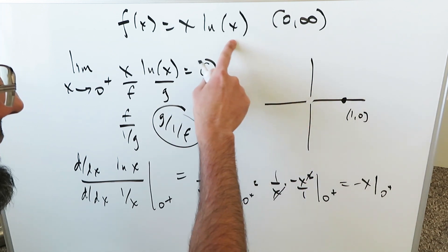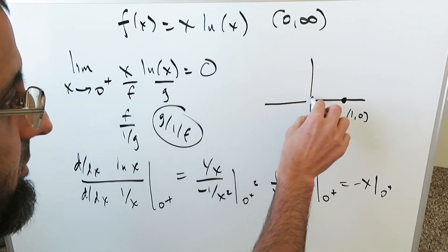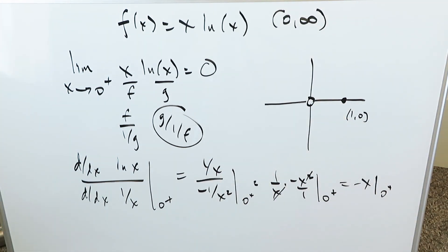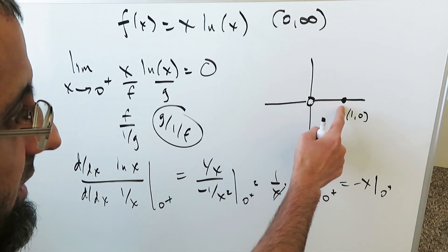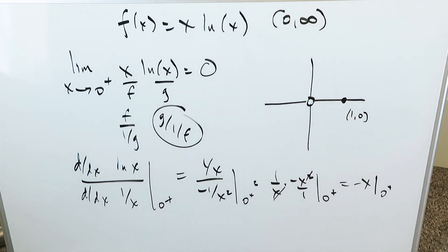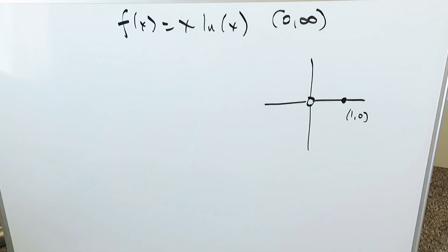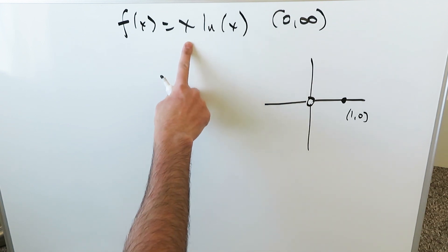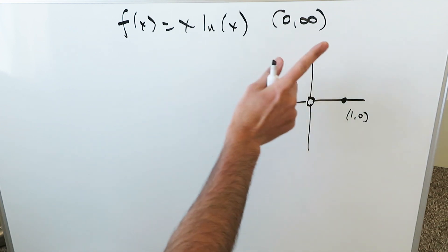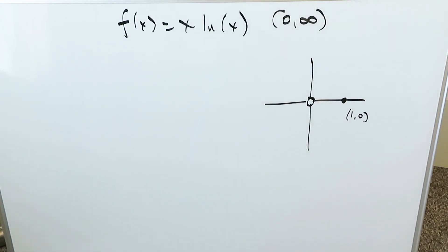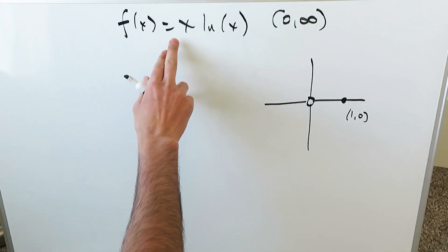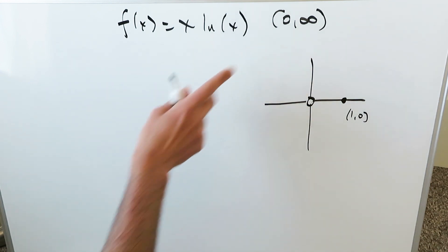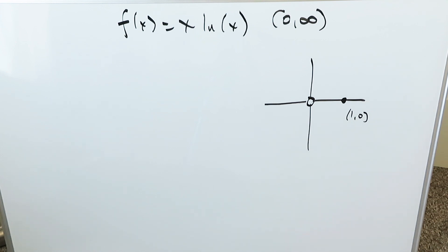This confirms clarity on the origin. The function approaches zero there, but since natural log of zero is undefined, the origin is an open or empty value on the graph. So we have two roots: one closed at (1, 0), and one open at the origin. As for the extreme behavior, taking large values of x — 50, 100, 1000, infinity — the product x times natural log x grows without bound, so the function increases towards infinity.